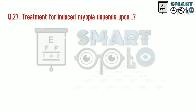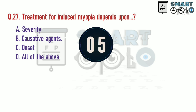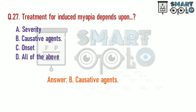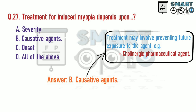Q27. Treatment of induced myopia depends upon: A. Severity. B. Causative agent. C. Onset. D. All of the above. Treatment may involve preventing future exposure to the causative agent, for example, cholinergic pharmaceutical agents.